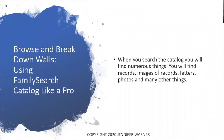When you search the catalog, you will find numerous things. You will find records, images of records, pictures of records that people have taken, letters — either personal letters from family members or letters from World War I, World War II, the Civil War — letters pertaining to the military. You will also find those spread out through FamilySearch itself, as well as videos, audios, photos, and many other things.